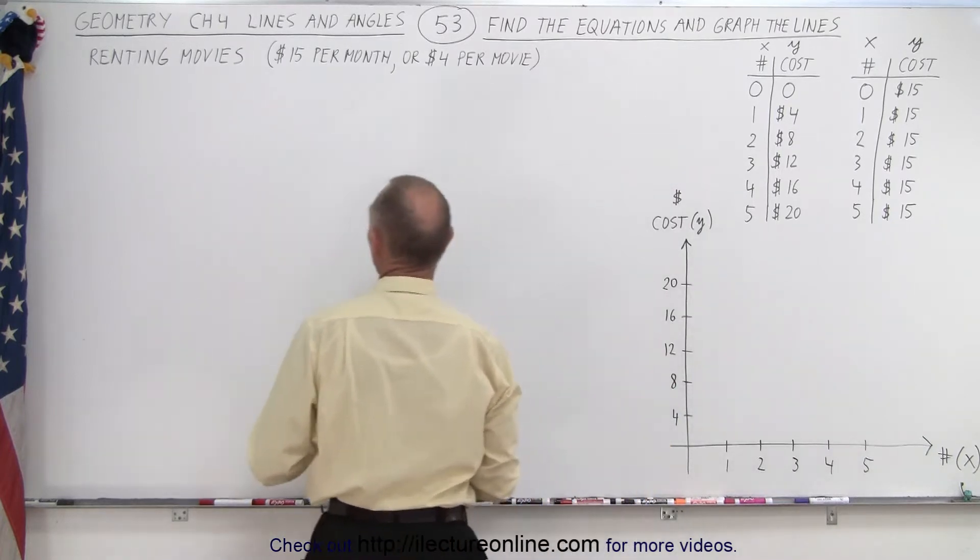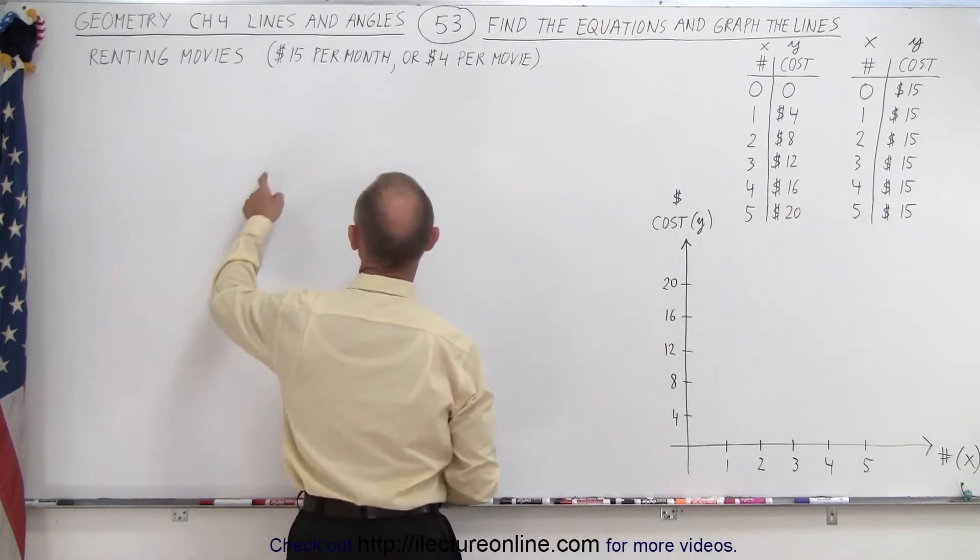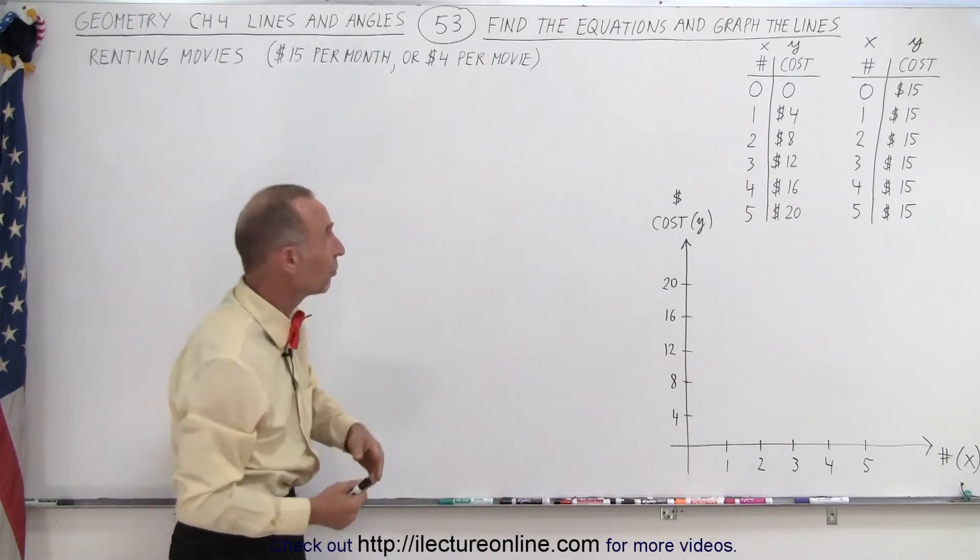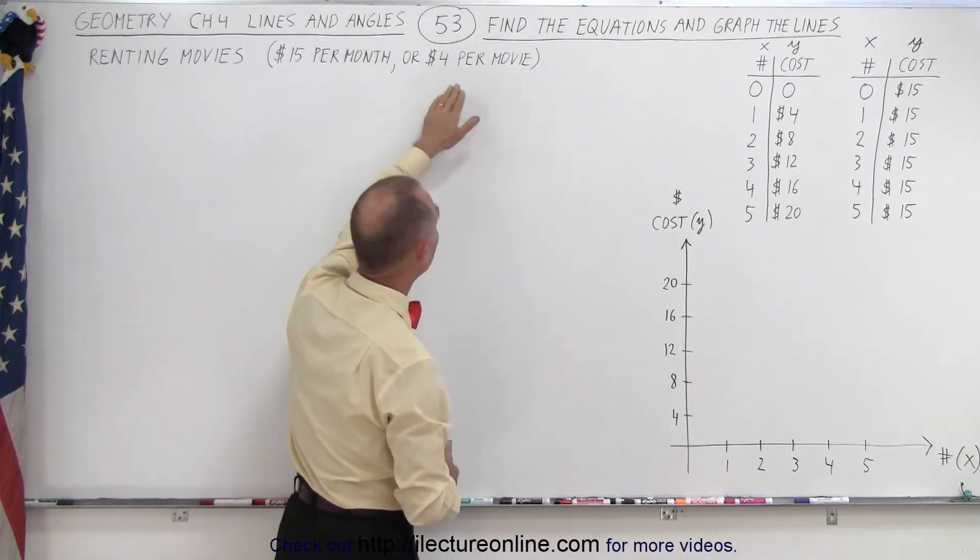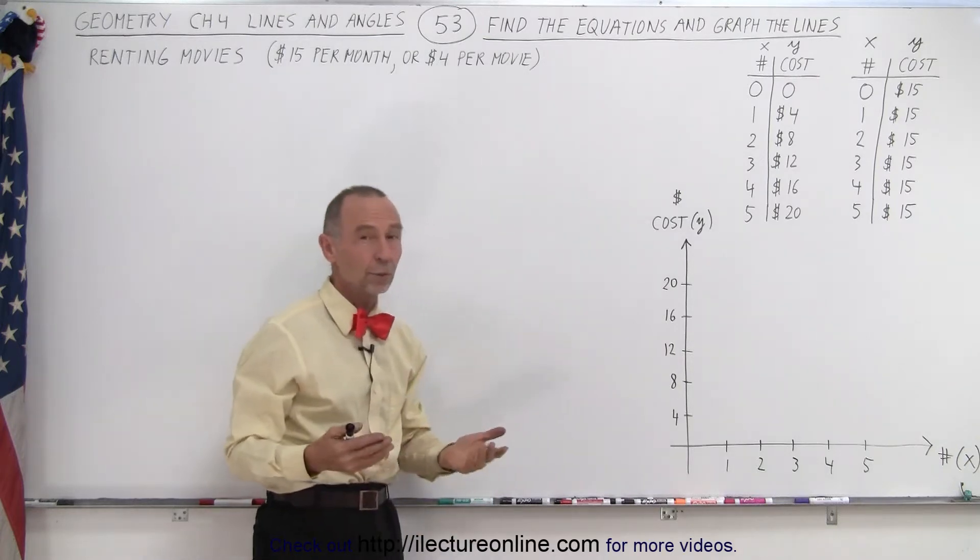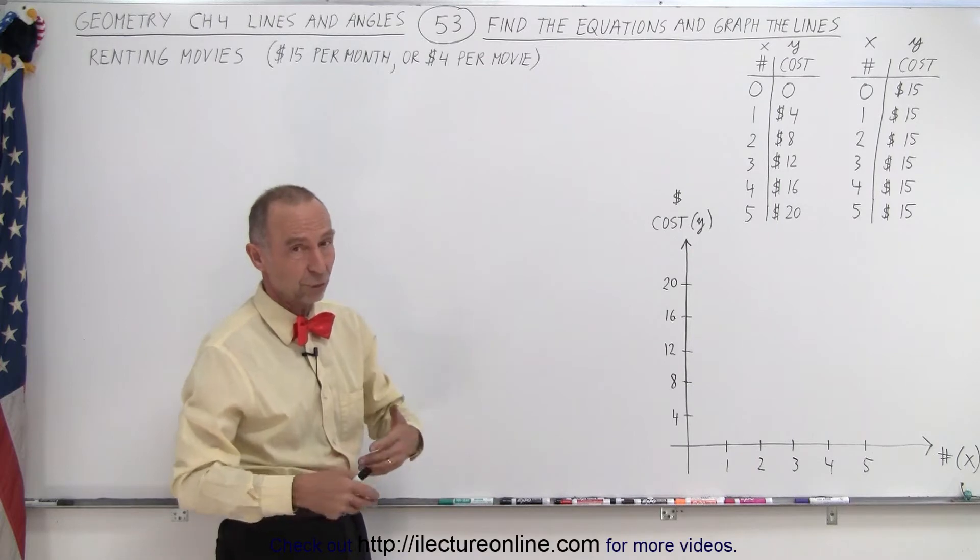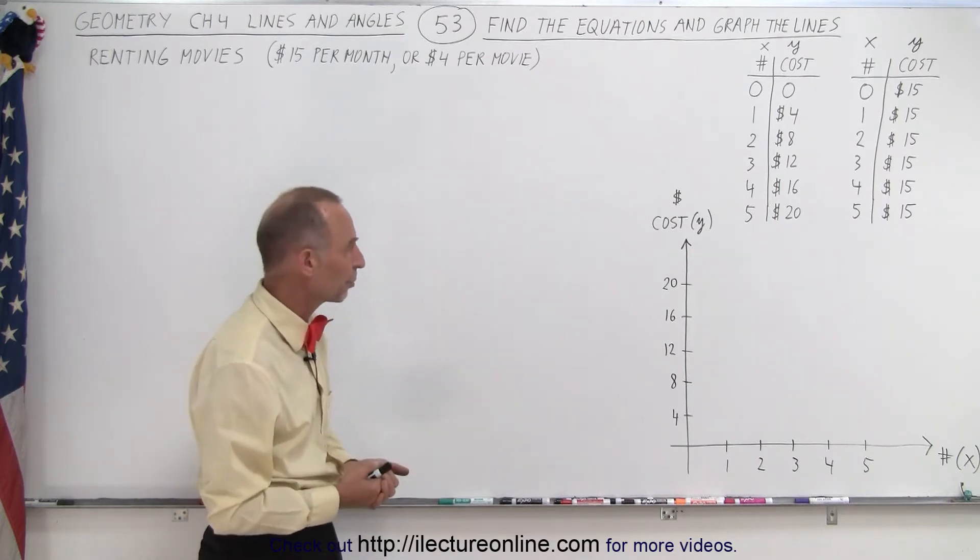Notice we're dealing with a situation where we're trying to rent movies and we can either pay fifteen dollars per month and rent as many movies as we want, or we can spend four dollars per movie. At what point would it be cheaper to just pay the fifteen dollars, at what point would be cheaper just to rent per cost four dollars per movie.